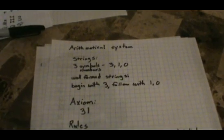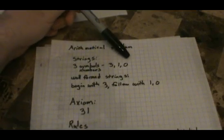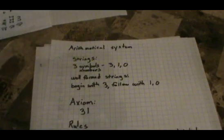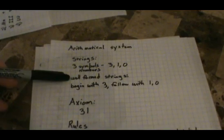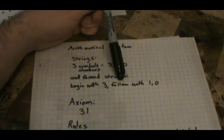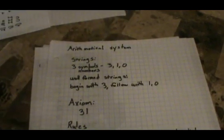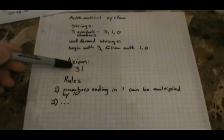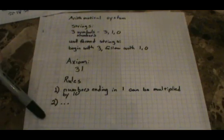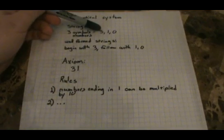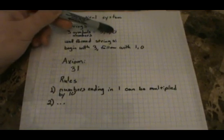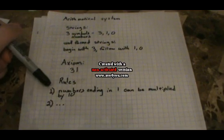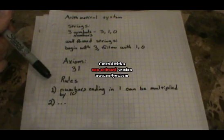Instead of rules that we apply as mechanical processes, we'll do nothing but arithmetic. This system is also going to use three symbols: three, one, and zero. The advantage of using these three symbols is that they're numbers, so we can operate on them as we do any other number. Well-formed strings will start with the number three and follow with only ones and zeros. You're probably noticing a similarity between this one and the last system — and yes, these two systems are going to function exactly the same as each other. Our axiom will be 31, and we'll have four rules as well. All we're doing is substituting M's for threes, I's for ones, and U's for zeros.